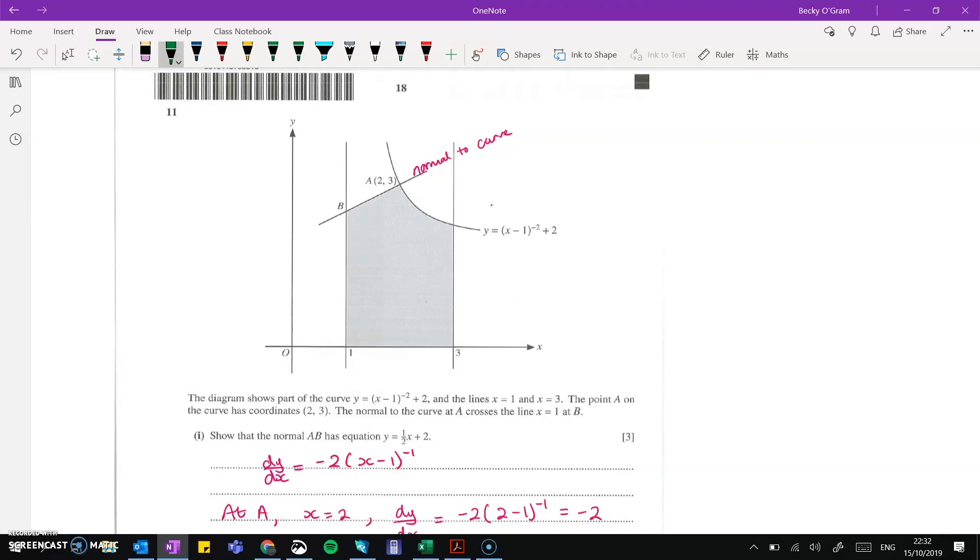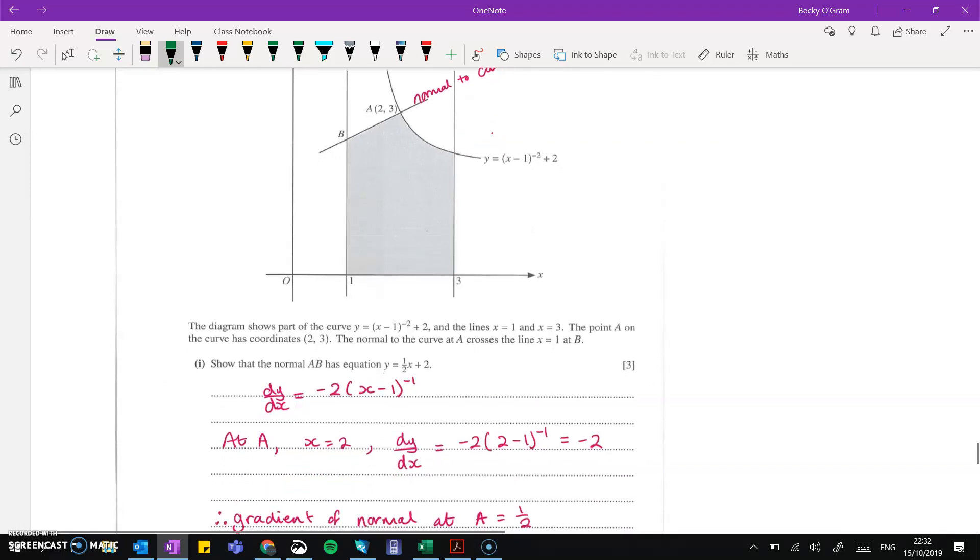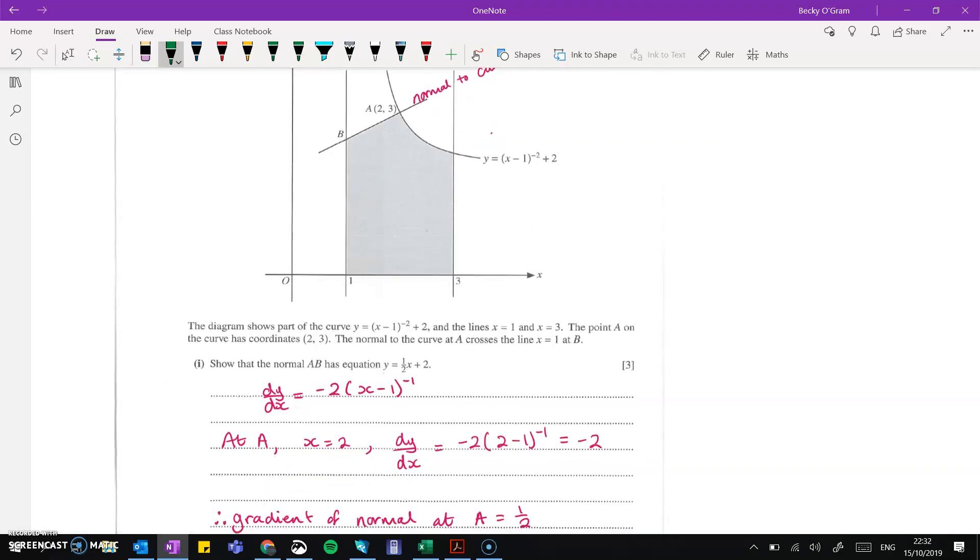So show that the normal a, b has this equation. So basically, find the equation of the normal. So if we differentiate y, then we get this, and then we know that at ax is 2, so the gradient of the curve at a is minus 2.